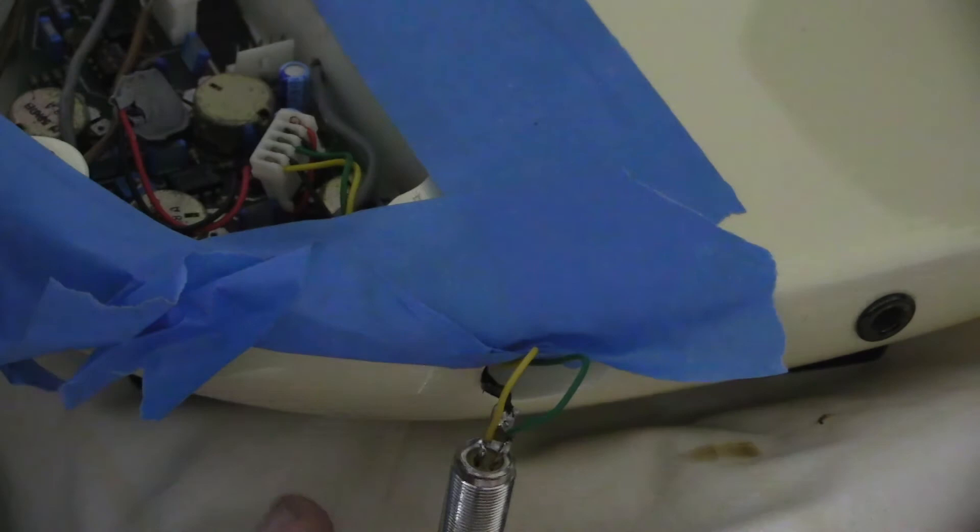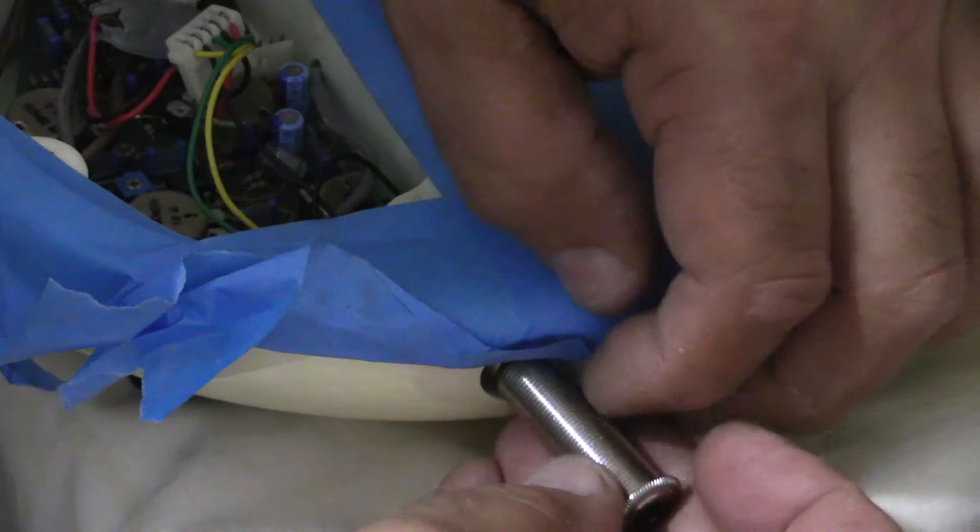And then pull the cables back through so you don't pinch them. Insert the new barrel jack into the hole.